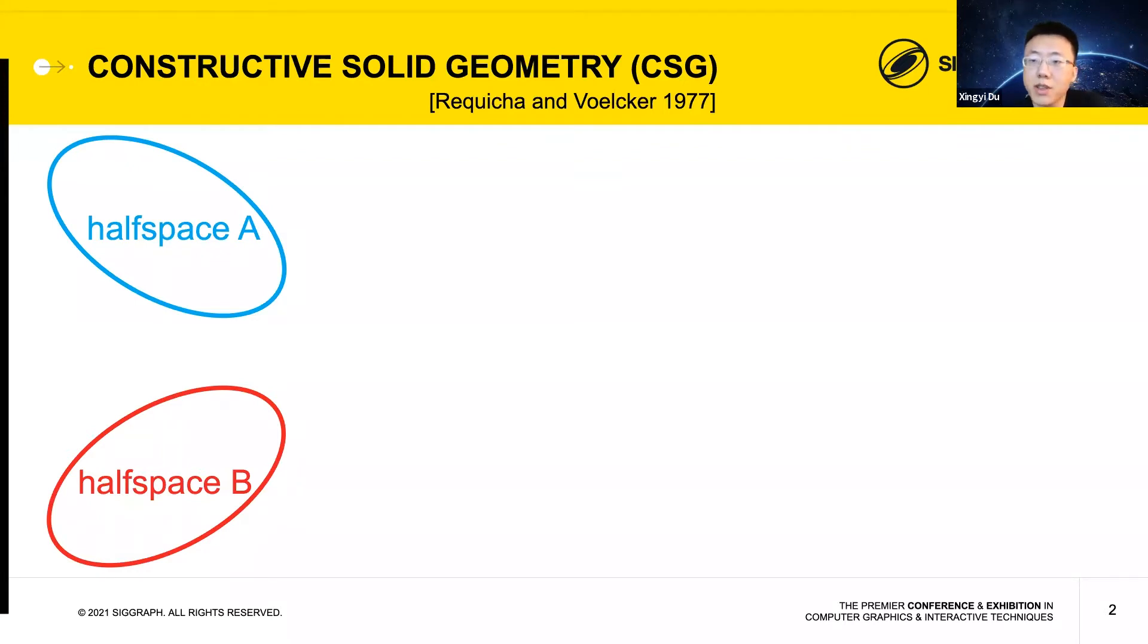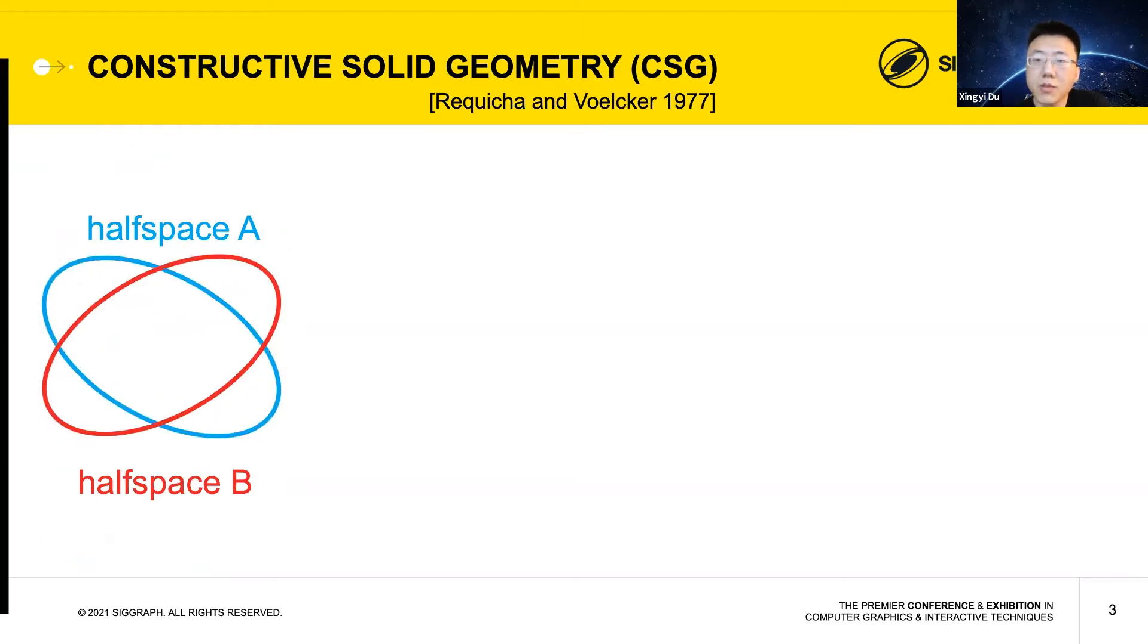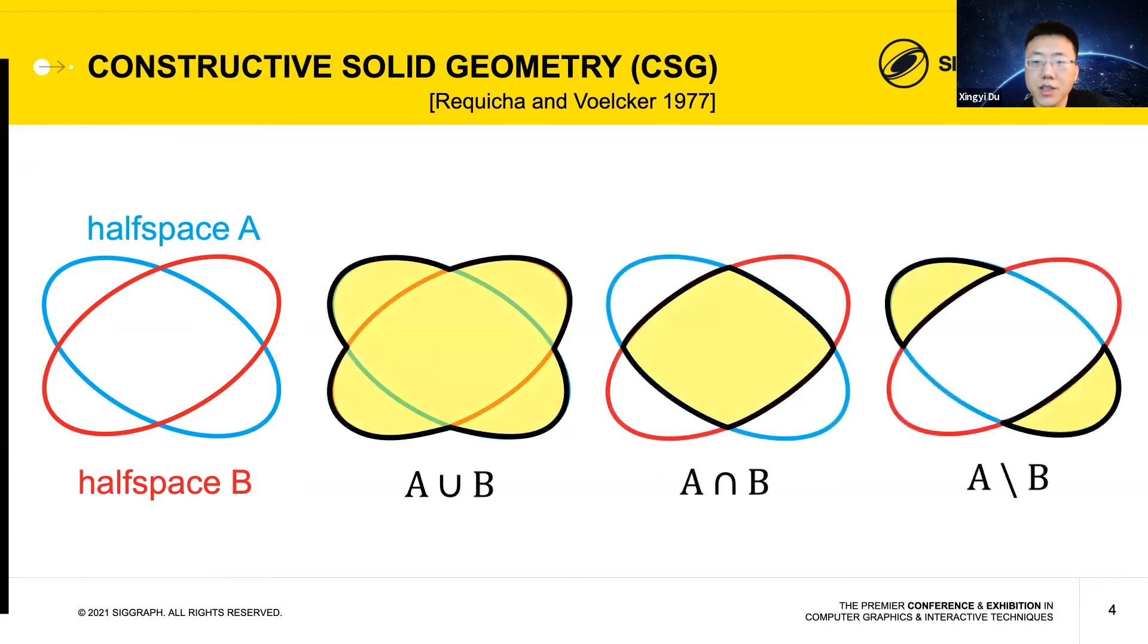Solid modeling is a major area of study in computer graphics and has wide applications in design and manufacturing. One of the most common representations for solid models is Constructive Solid Geometry, or CSG. First proposed in the 1970s, CSG combines simple solid shapes into complex solids using Boolean operations. The simple shapes are known as half spaces since they partition the whole space into two pieces, one inside the shape and the other outside. Using Boolean operations such as union, intersection, and difference, CSG can model lots of different shapes, shown here as yellow solids.